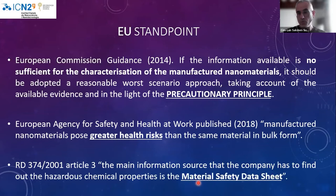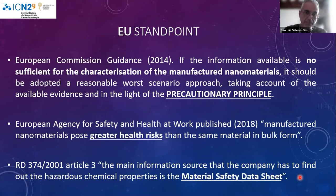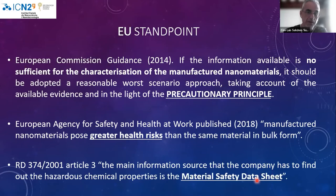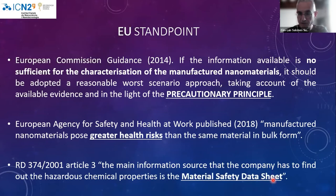The best way to have correct information about a nanomaterial is to have a well-written material safety data sheet. What we usually find, however, is that safety data sheets are not well completed—they contain general information mainly connected with the bulk form, with no good characterization and no specific information about the nano form. They are so general that they don't give us the information we need to work properly. Through CRUE, our health and safety group of universities, we have designed a specific data sheet for nanomaterials, which is available if needed.